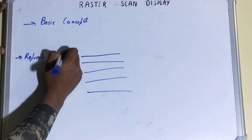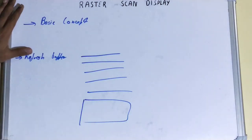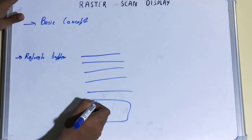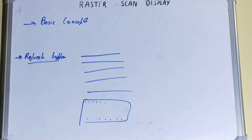Now let's discuss the refresh buffer. The picture definition that needs to be drawn is stored in a memory area called the refresh buffer or frame buffer. Whatever picture you need to display on your screen is stored in your refresh buffer — not just the picture itself, but the intensity values for every pixel are stored in it. The refresh buffer holds the set of intensity values for all screen points.